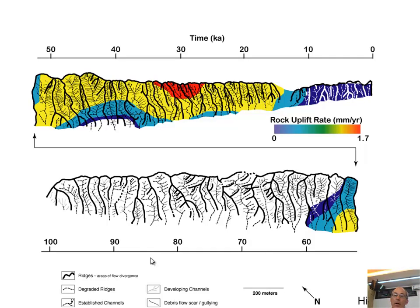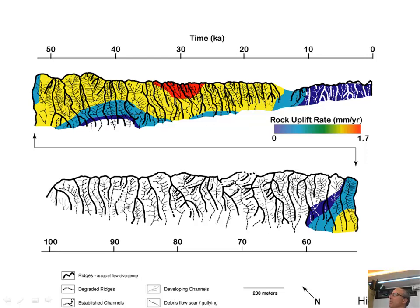This is a map along the pressure ridge of different landforms — ridges and developing tributaries — a process and geomorphic map. What George was showing is that near the active uplift zone there are more young, developing channels, whereas in the older area they are more established, and some are even dying back because there's just not enough relief to keep the drainages going.